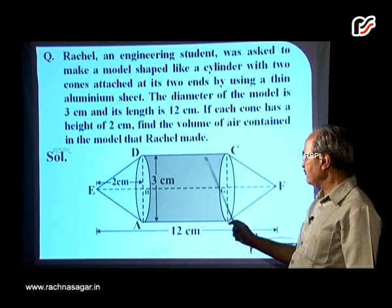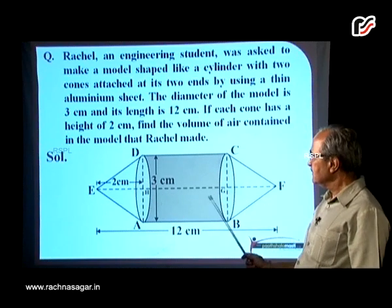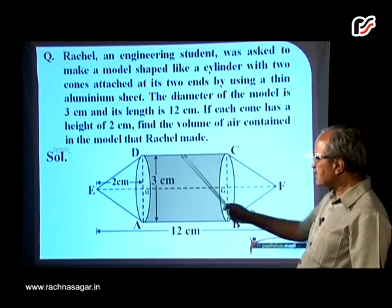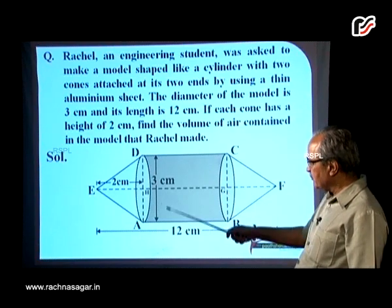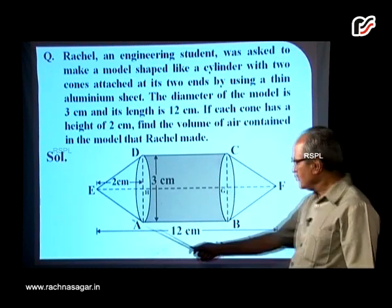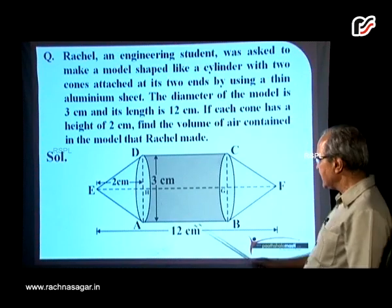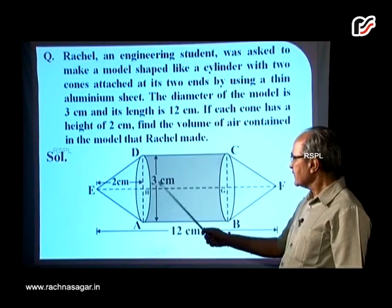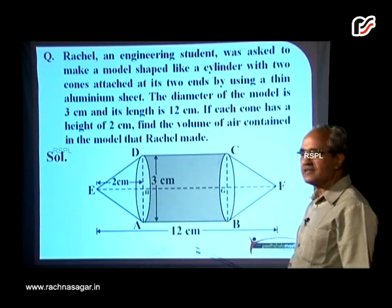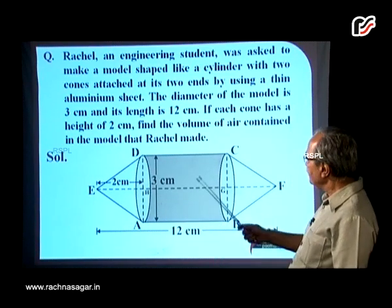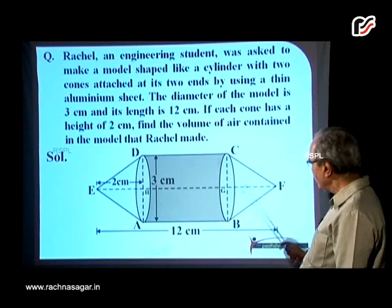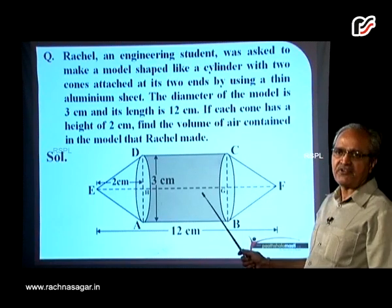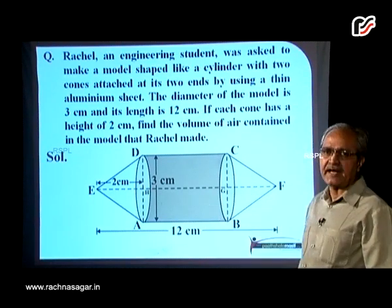Again, we make a figure like this. This is a cylindrical portion. The diameter of the cylindrical portion is 3 cm and total length of the model is 12 cm. And for the conical portion, height is 2 cm. So we have to find out the total volume of this model. Let us start working towards that.